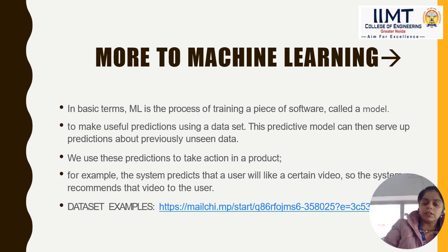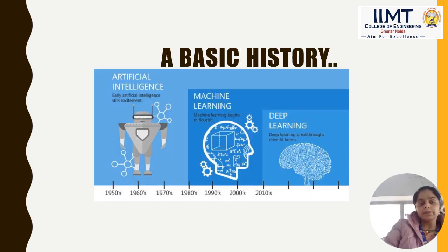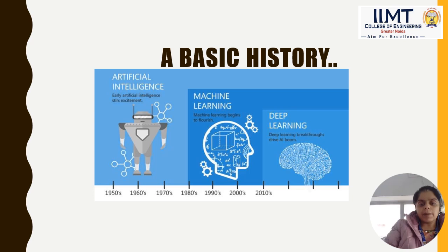Machine learning is basically inbuilt software, like Alexa working. If your phone asks to record something and it automatically responds — that is the machine learning process. Looking at the basic history: first came artificial intelligence, then machine learning, then deep learning. In the early 1950s, 1960s, and 1970s we used artificial intelligence concepts. After that, in the 1990s, we moved to machine learning and logic-based approaches, and now thinking processes are becoming increasingly advanced.